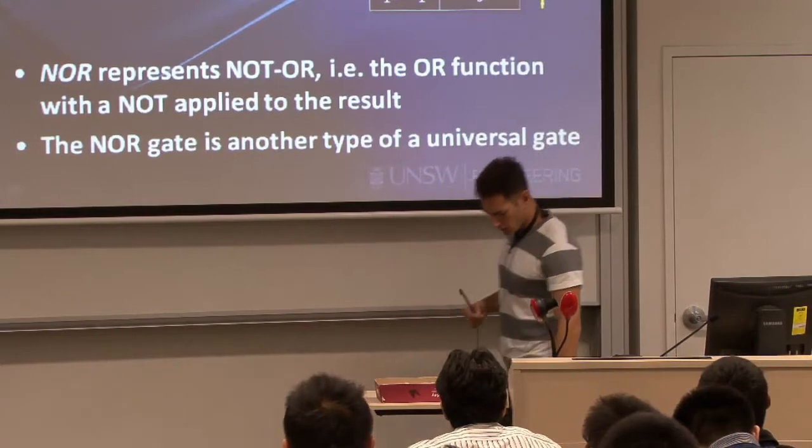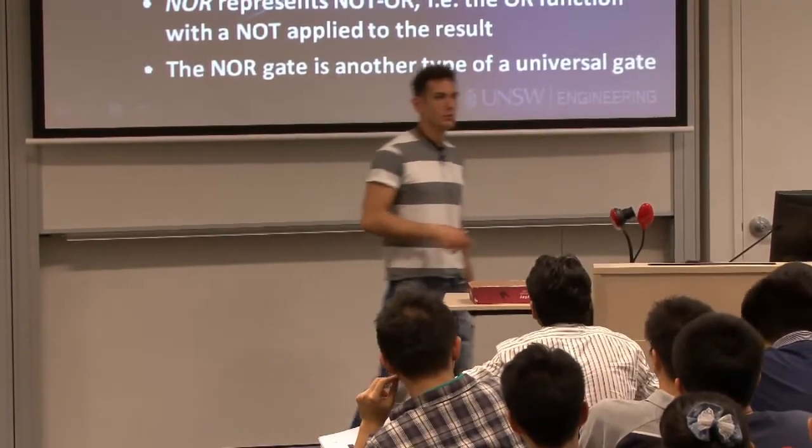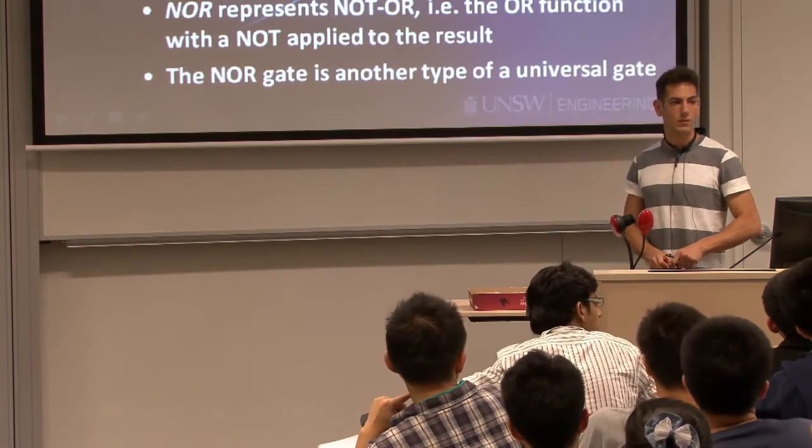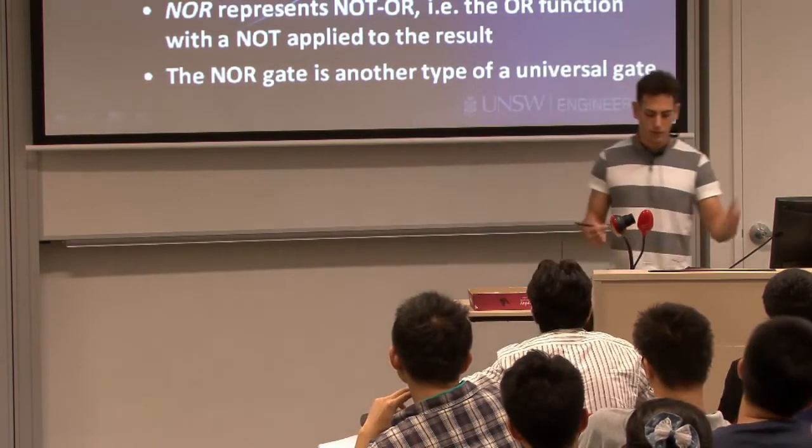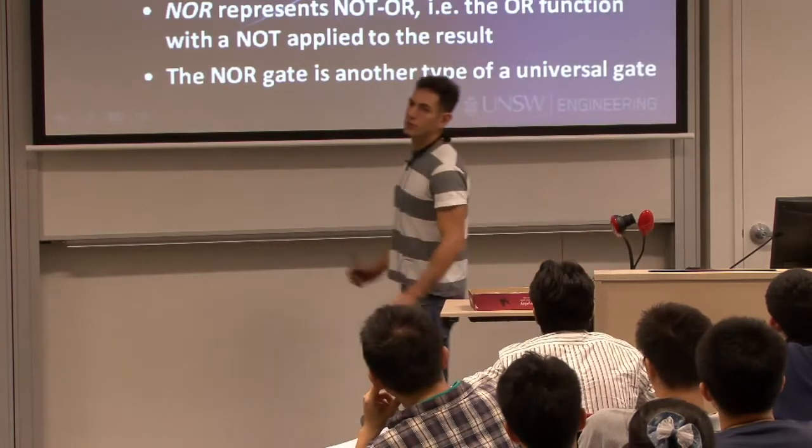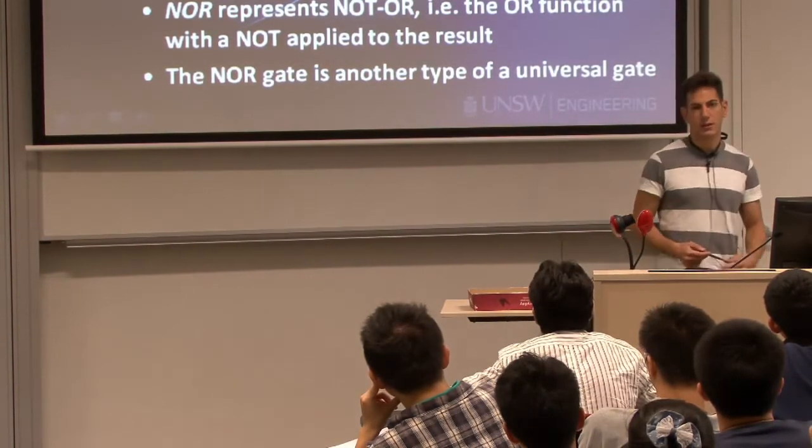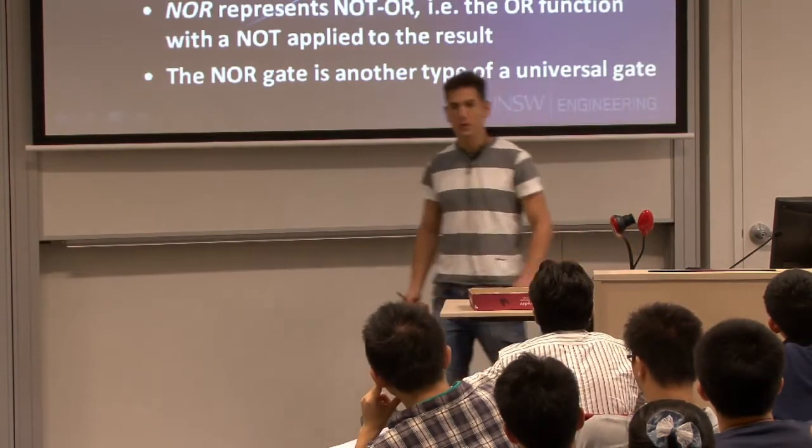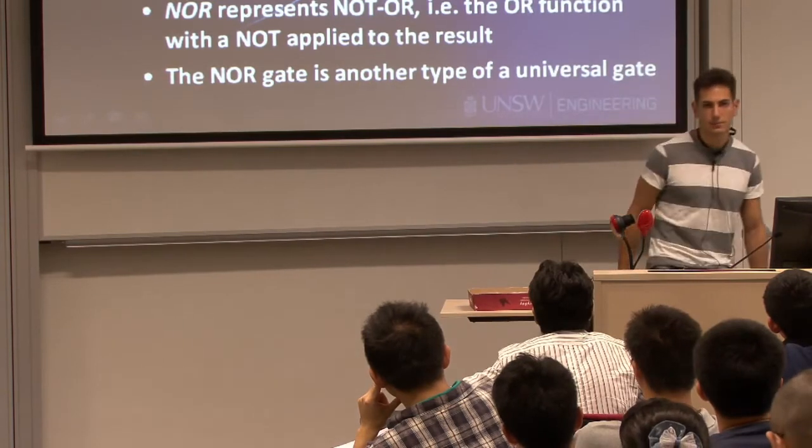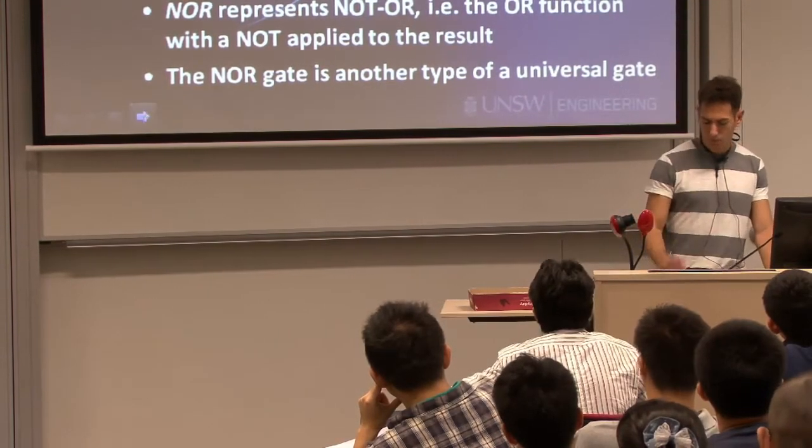Now, just on that note, that universal gates, someone asked me yesterday why couldn't an AND gate or an OR gate be a universal gate? Why do we go into the NANDs and the NORs? And if you think about it, if you wanted to have an OR-only implementation, there's no way for you to invert a signal. And this is one of the fundamental gates that we need to implement. No matter how much you try to play with the inputs or whatever tricks you try to come up with, there's no way you can have X coming on one side and not X coming on the other side. And this is true for an AND gate as well. Although, we could do it with NANDs and NORs, so that's the reason there.